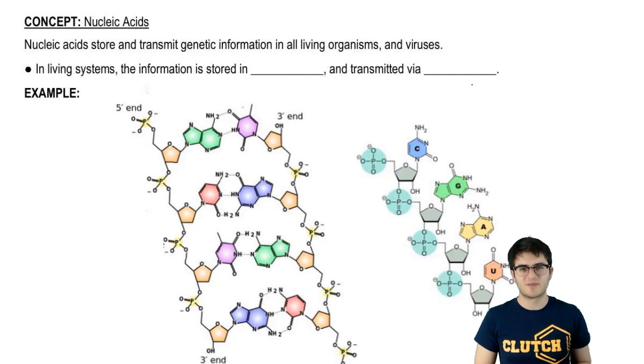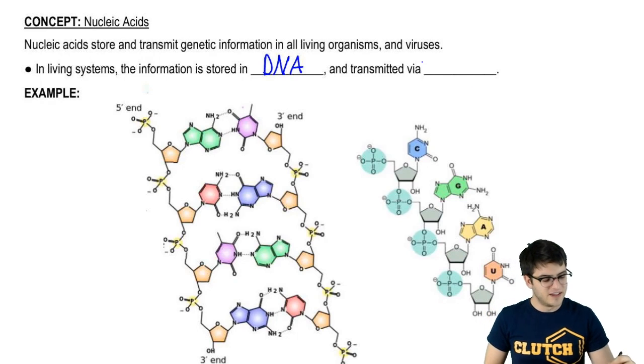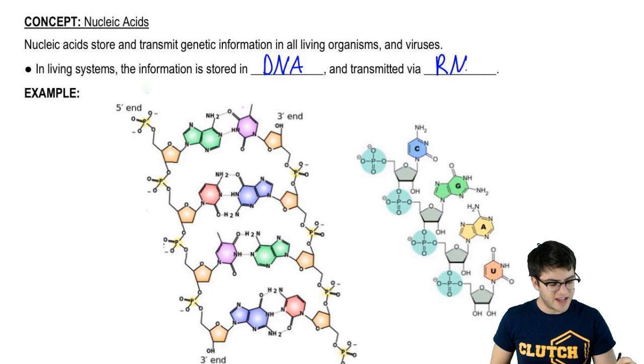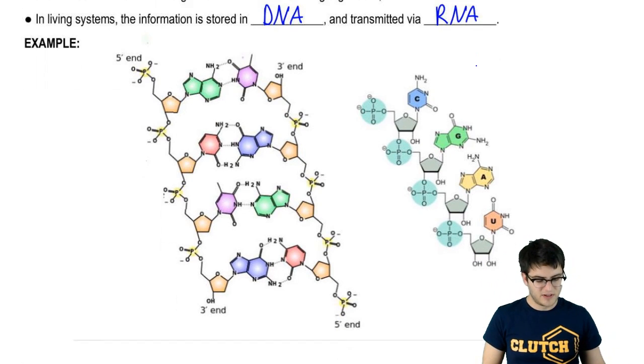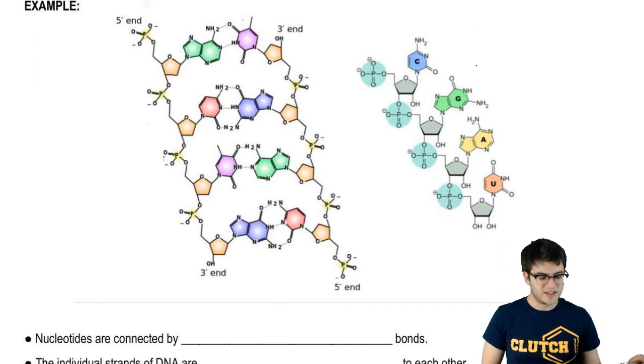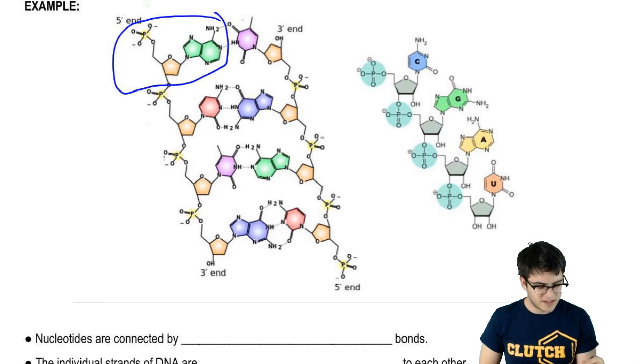Nucleic acids store and transmit genetic information. The information is stored as DNA and transmitted as RNA. DNA is a polymer of nucleotides, and we can see the nucleotides in the molecule here.